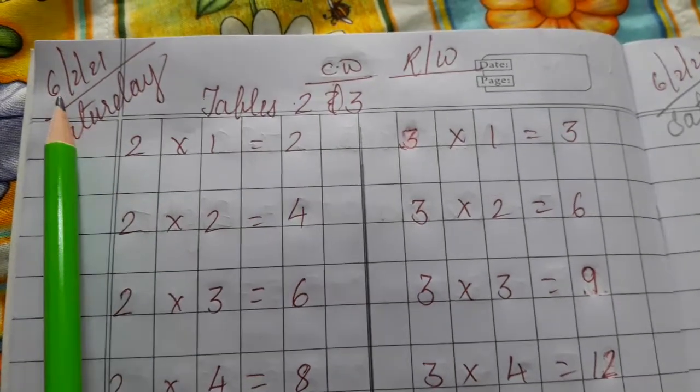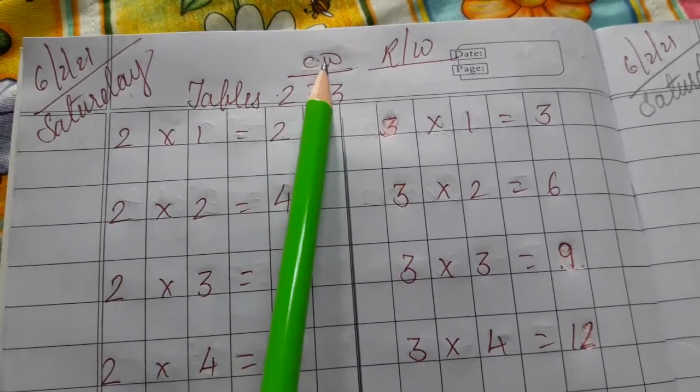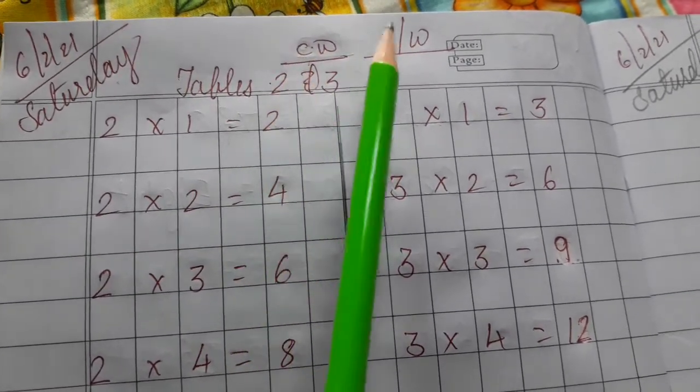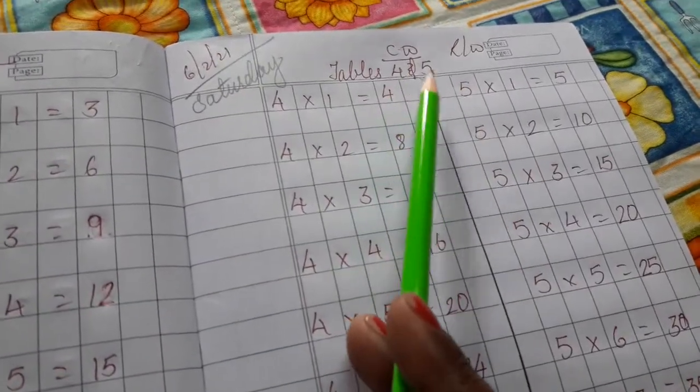Today, date is 6th February 2021. Day is Saturday. Class work. Class UKG. Revision of table 2, 3, 4 and 5.